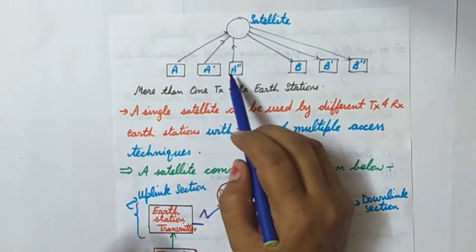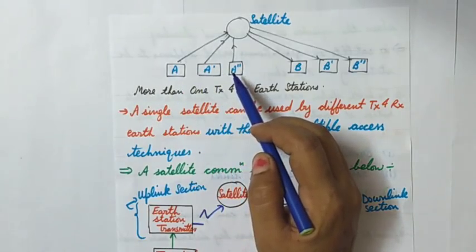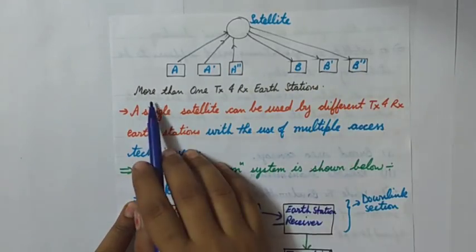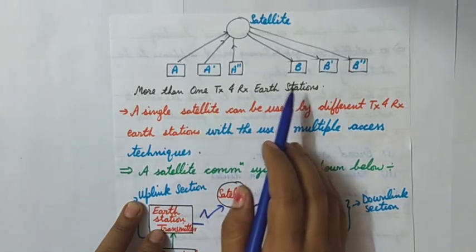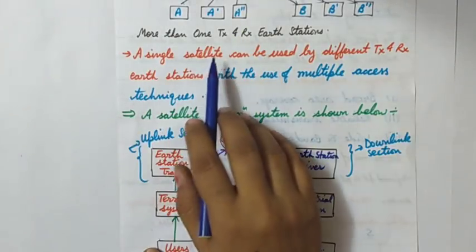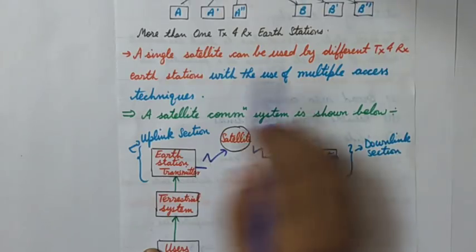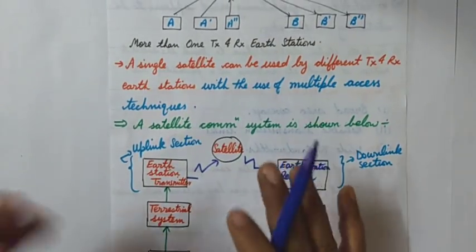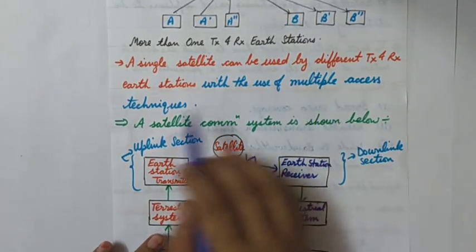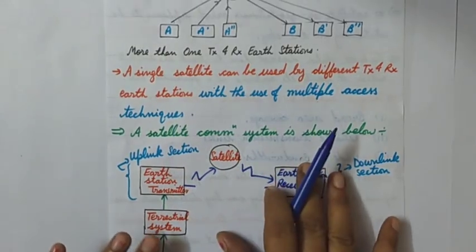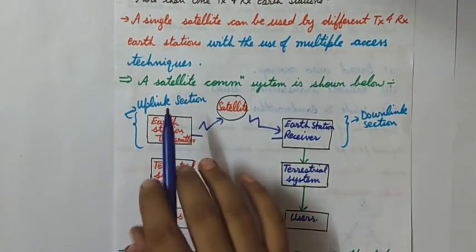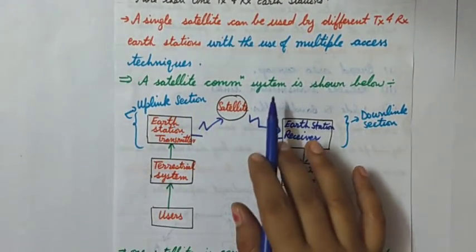Here we can see one satellite communicating with A, A-dash, and A-double-dash, which are transmitter earth stations, and B, B-dash, and B-double-dash, which are the earth station receivers. So more than one transmitter and receiver earth stations are connected to a single satellite. There has to be some technique by which they can access a single satellite, so they use multiple access techniques — by this, a single satellite is used by many earth stations.